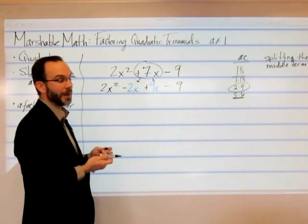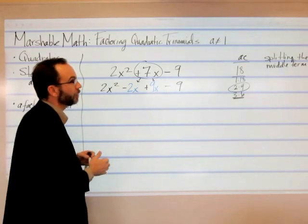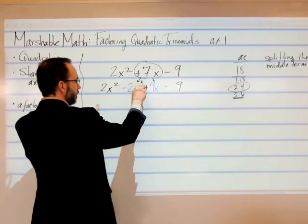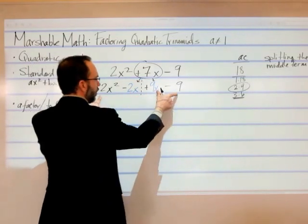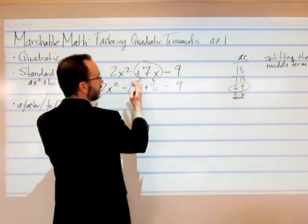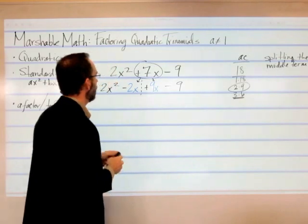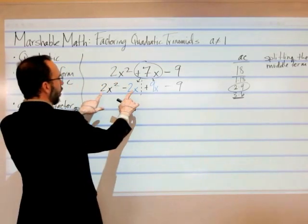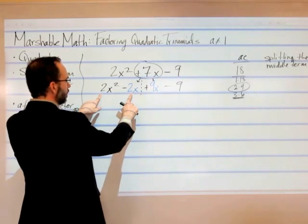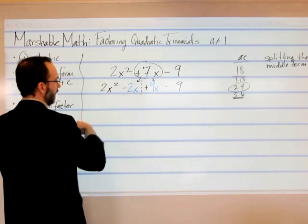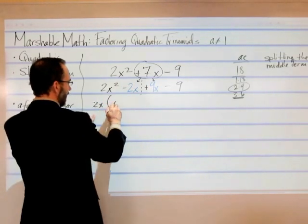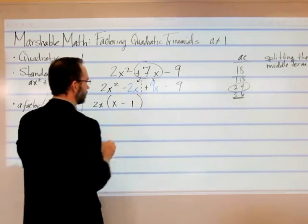Now we're going to use factor by grouping. If you need to review factor by grouping, just take a moment and do that. We're going to take the group on the left and the group on the right, and I draw a little dash line down the middle to separate them. Don't put parentheses here because then you're changing it into a multiplication problem. I'm going to look at this group and think: what's the greatest common factor of 2x squared minus 2x? That's 2 and an x, so I take out a 2x, leaving me an x minus 1.